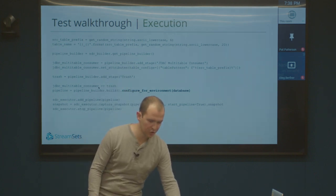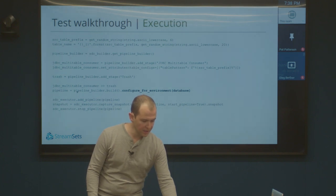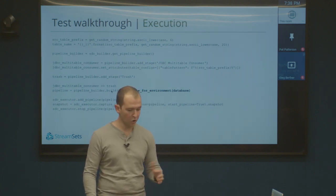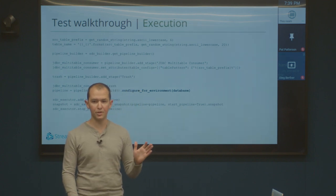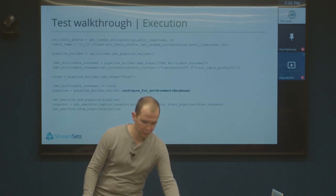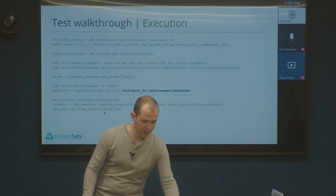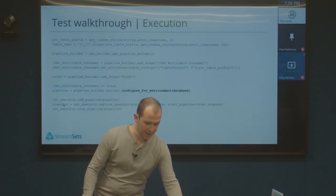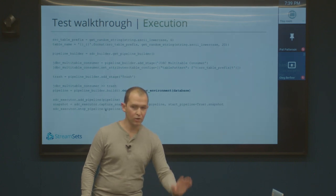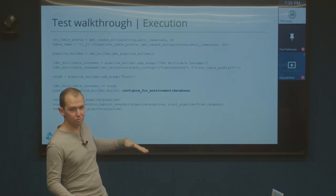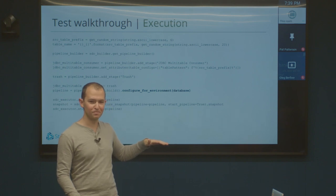So basically this line is visualizing what you would actually see in the StreamSets UI. Then finally, once you have your builder and you're happy with all the stuff you've done to it, you call a build function and that returns a pipeline object. All of this that you've seen so far is already available in this Python SDK that we've had around for a while. The rest of this code on this page is basically adding the pipeline to the sdc_executor — the one that's going to run the pipeline — and then we take a snapshot and stop the pipeline at the end.